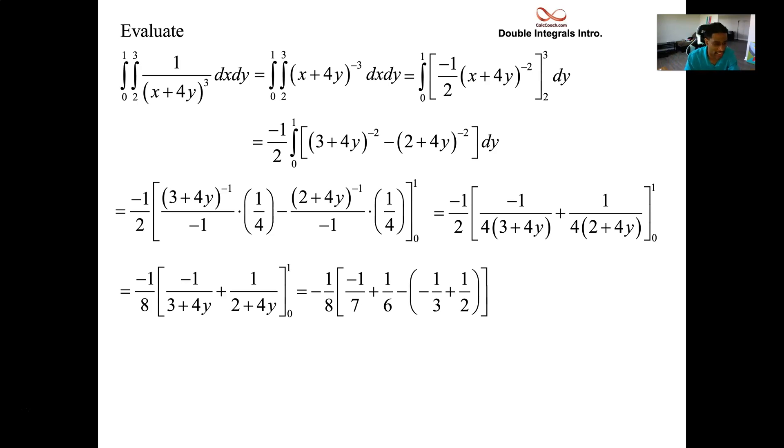Crazy fraction arithmetic, but you can do it. Common denominator between seven and essentially six, because three and two going into six is 42. So everyone goes over 42.